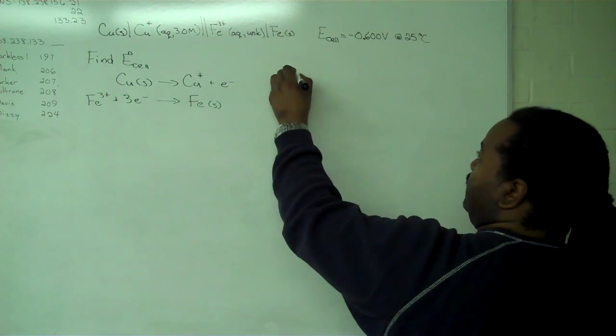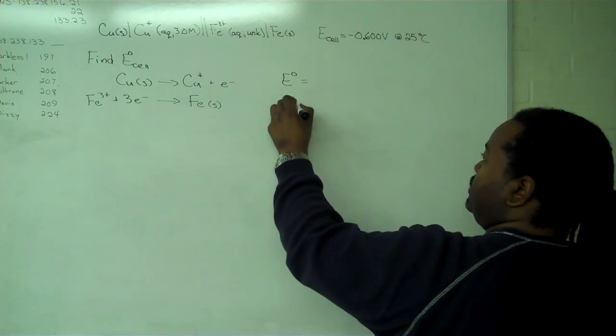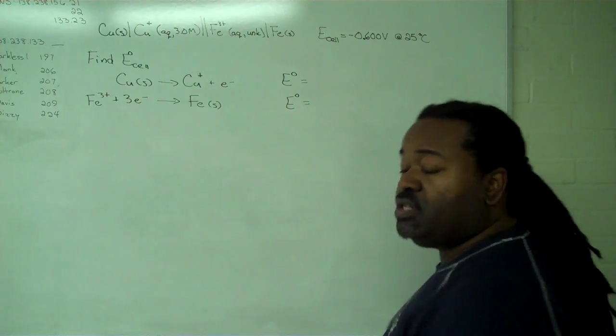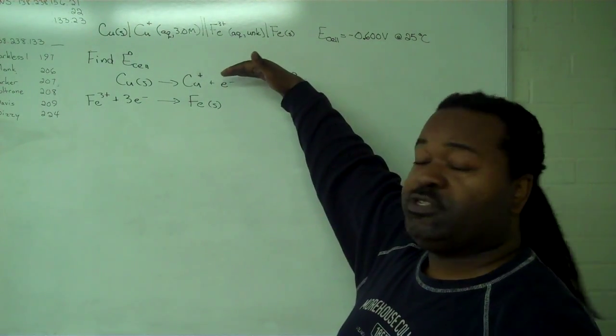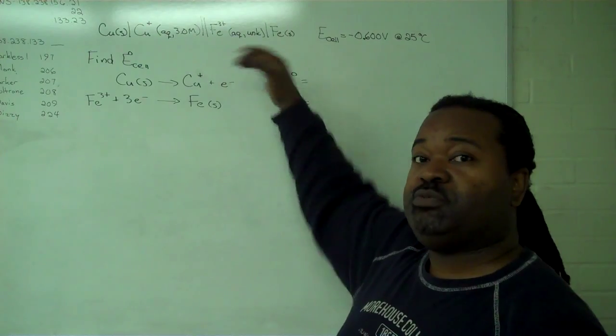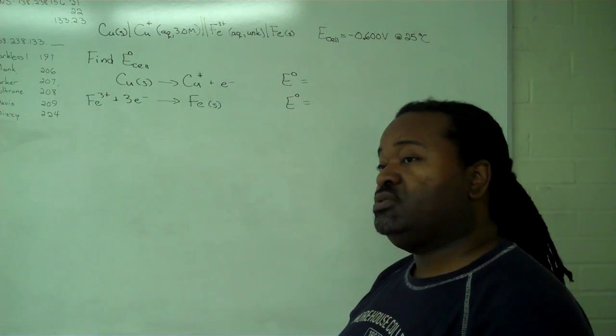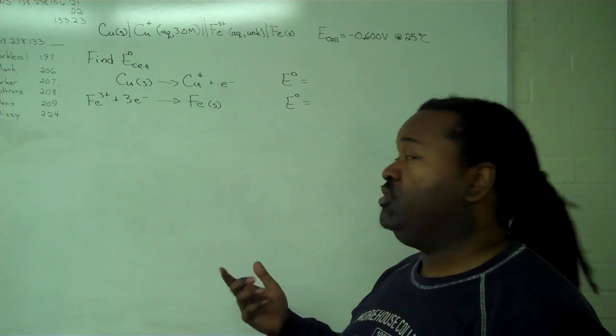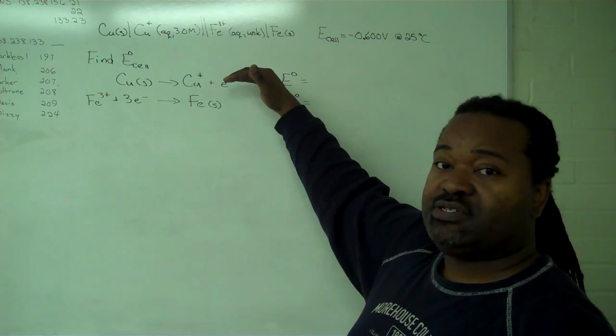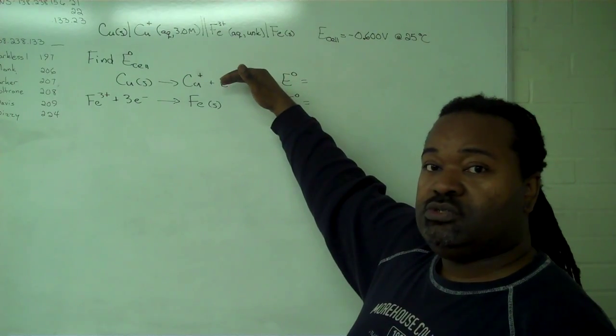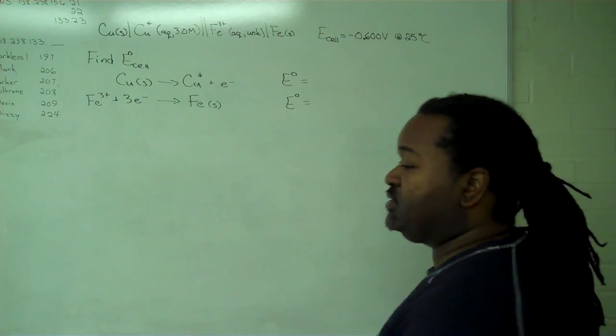we want to find them in a lookup table of reduction potentials. Because the lookup table will be reduction potentials, this first one is written as oxidation. It must be reversed to be found in the table of reduction potentials. Once we've found that value for E cell of the reduction reaction, in order to use it for oxidation, we must change the sign.